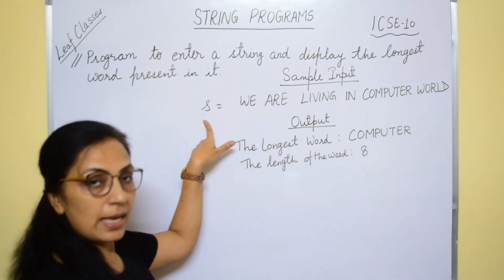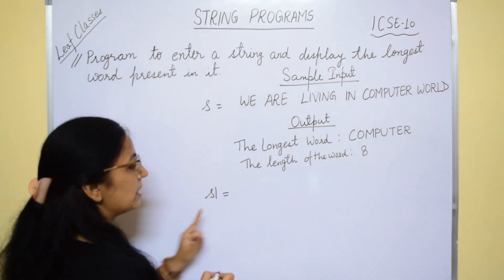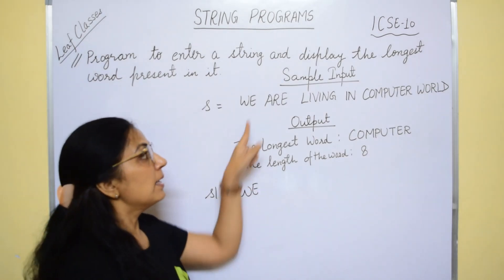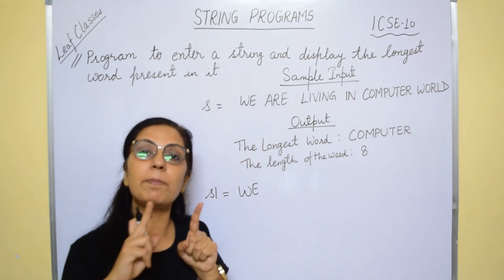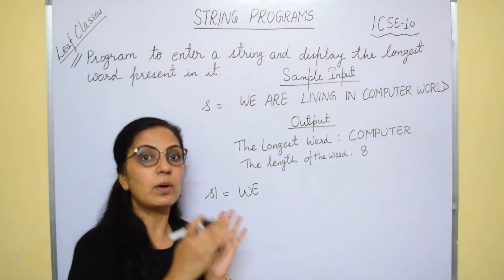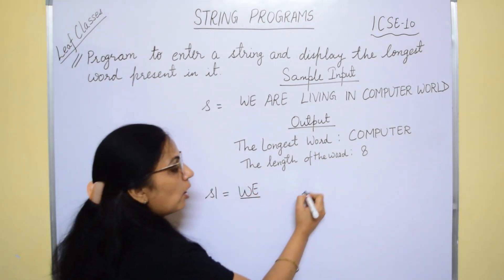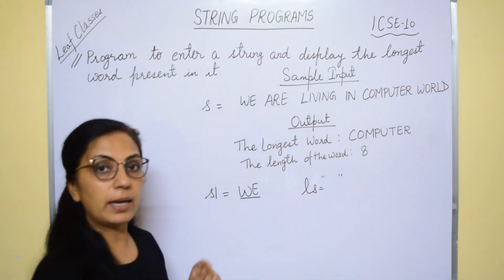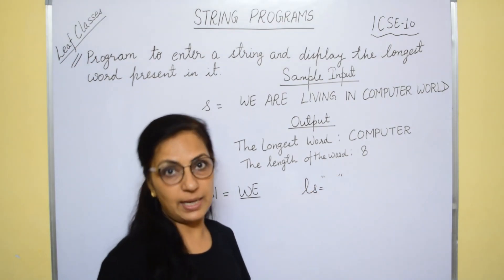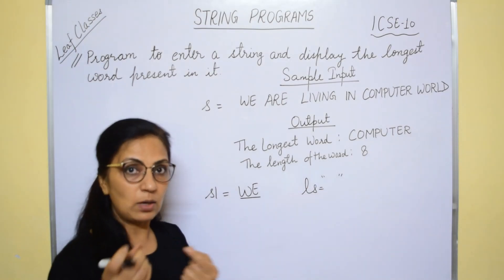If I have taken this string in S which I have entered from the user, after this we will take a string S1. We will extract character by character. When we get a space — space is the separator between two words — where we get a space, this means that one word is over. So when we are getting a space here, one word is over. Now we have to take another string in which we will store the longest word — the complete longest word which we will display in the answer. And this word we will initialize with a single space. Then only we can do the comparison.